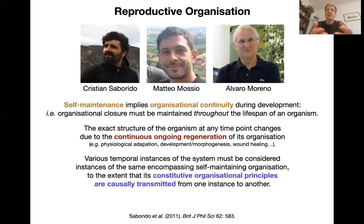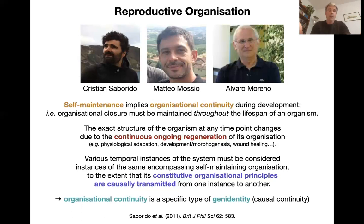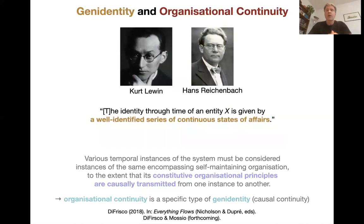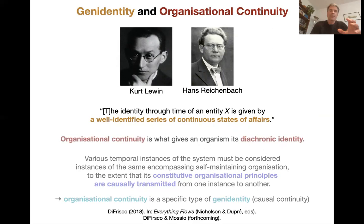In terms of the properties you have right now — physically and character-wise — there's very little you have in common with yourself as a two-year-old. Organizational continuity is a specific type of gen identity, which is basically causal continuity. This concept was introduced by Kurt Lewin in 1922 and elaborated by Hans Reichenbach in the 50s. The major point with gen identity is that it is the identity of an entity through time given by a well-identified series of continuous states of affairs — a continuity criterion for identity, not a set of properties. And that type of gen identity is what gives an organism its own diachronic identity.